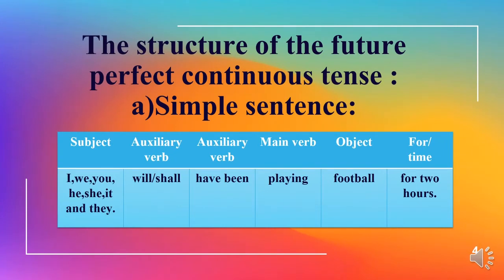Now we will discuss the structure of future perfect continuous tense. For simple sentences: apply subject such as I, we, you, he, she, it, and they in the beginning. Then apply two types of auxiliary verbs — will or shall — and have been. After that apply the main verb as first form of the verb with -ing, such as 'playing.' Then apply object such as 'football,' then apply 'for' and time such as 'for two hours.'